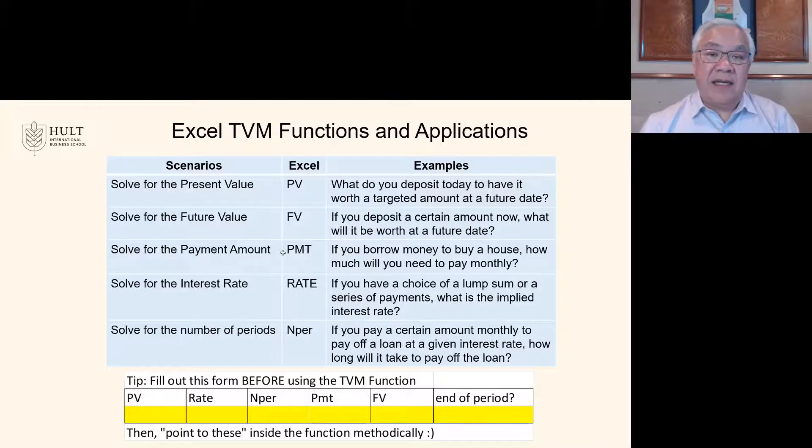So let's summarize the Excel time value money functions and the applications. So first is let's solve for present value. So the function is called PV. And the question would be, if you have a target amount, you know, you want at a future date, how much do you have to deposit today? Today is present value, right? Second is solve for the future value. If we deposit a certain amount of money today, how much will it be worth at a future time? That's the future value.